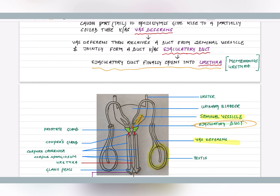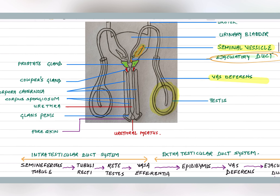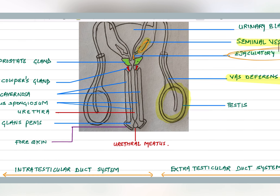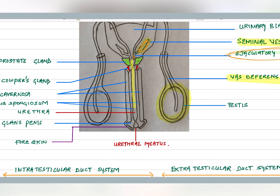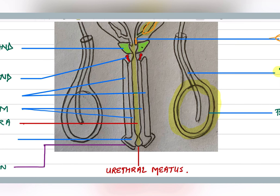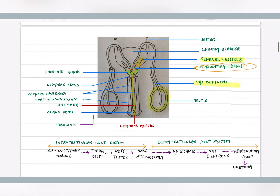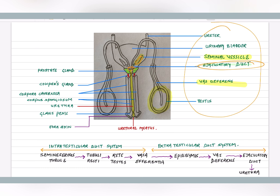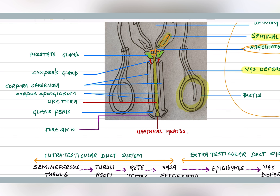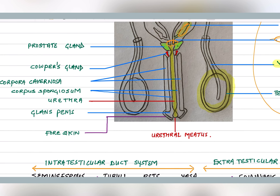The urethra runs throughout the penis. The ejaculatory duct opens into the urethra — this is directly asked in NEET. The structure of the penis: it contains the urethra running through it. Outside the urethra is the corpus spongiosum, and the outermost layer is the corpora cavernosa.